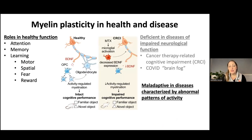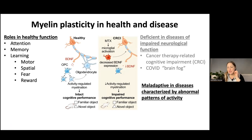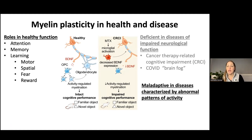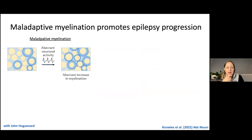We think that myelin plasticity is really important for healthy neural circuit function and cognition. We know that, at least in preclinical models, there is a loss of myelin homeostasis and plasticity in diseases of impaired cognition. What happens if there's too much myelin plasticity? What happens in diseases characterized by aberrantly increased patterns of neuronal activity — could this process become maladaptive and contribute to pathological circuit activity?